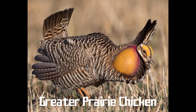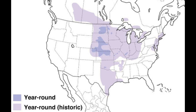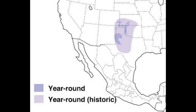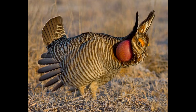The greater prairie chicken is another one of the fabulous display grouse where males put on a spectacular dance and call. The lesser prairie chicken is a very similar species that frequents a slightly different range than the greater prairie chicken. It was once widespread and abundant, but its numbers have crashed following heavy hunting in the 19th and early 20th centuries.